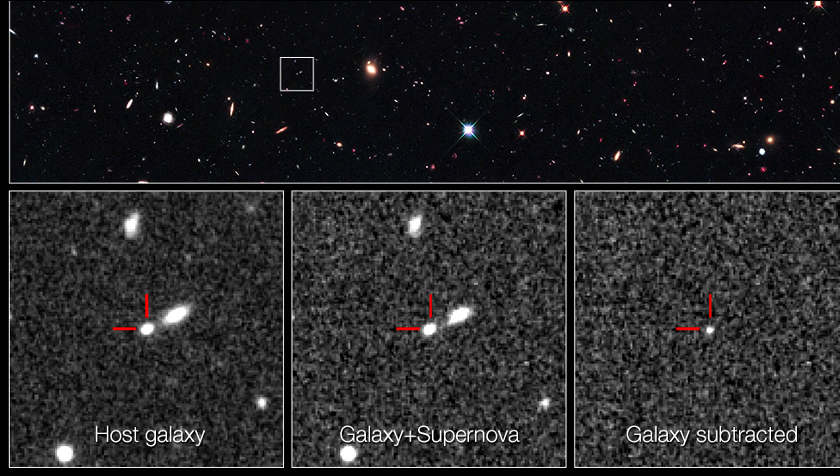The image at the far left shows the host galaxy without the supernova. The middle image, taken a year later, reveals the galaxy with the supernova. The supernova cannot be seen because it is too close to the center of the host galaxy. To detect the supernova, astronomers subtract the first image from the middle image to see the light from the supernova alone, shown in the image at the far right.